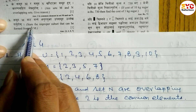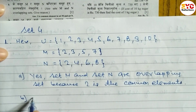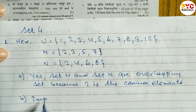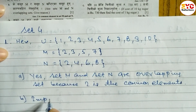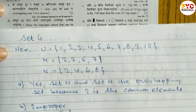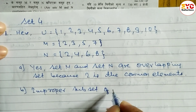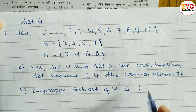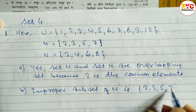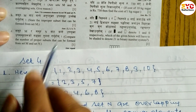Question (b): State the improper subset that can be made from set M. The improper subset of any set is the set itself. So the improper subset of M is set M — that is {2, 3, 5, 7}.